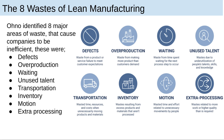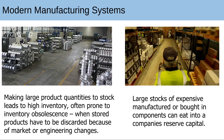Unused talent — waste due to underutilization of people's talent, skills and knowledge. Transportation — wasted time and cost moving materials. Inventory — excess products stored. Motion — wasted time and motion. And extra processing — waste related to more work or higher quality than is required.